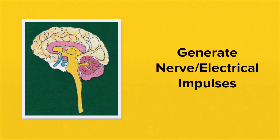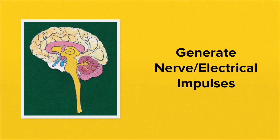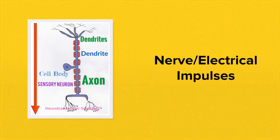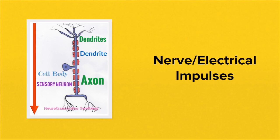These receptors are responsible for generating nerve or electrical impulses, and it's these impulses which get sent to the brain via specialised sensory neurons.